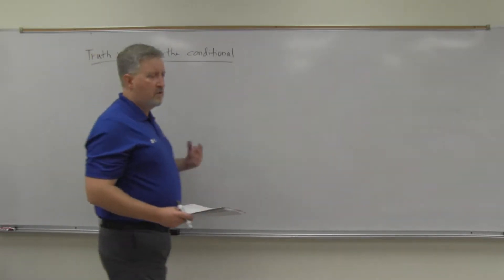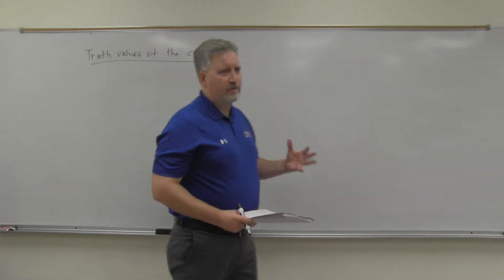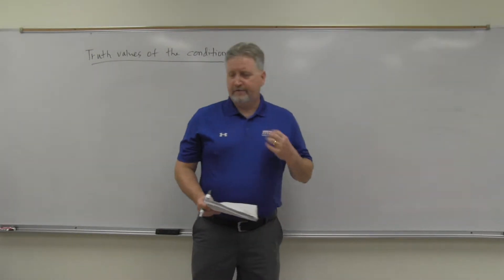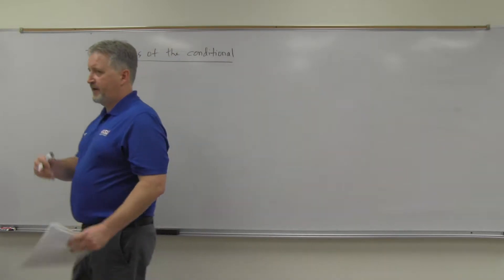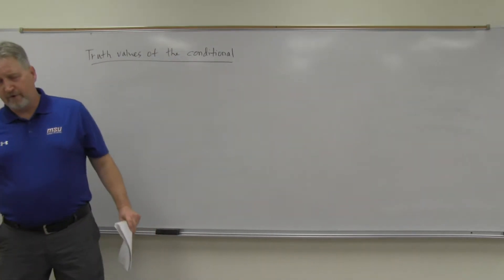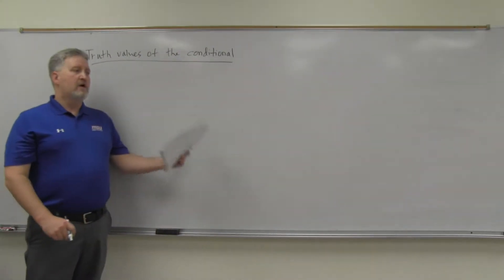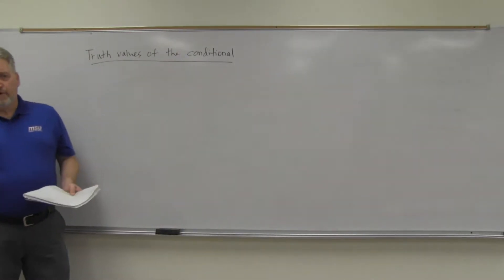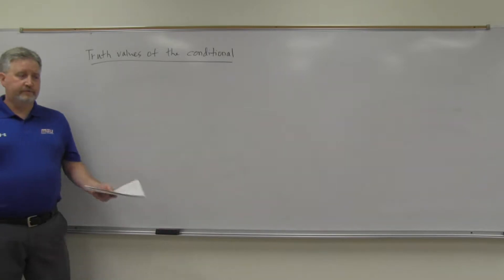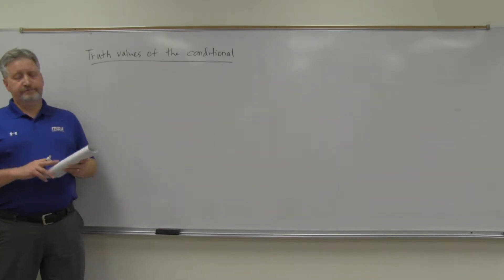All right, so we know how AND and OR work as far as truth values are concerned. AND is only true if both of them are true. OR can be true if both of them are true or one of them is true.